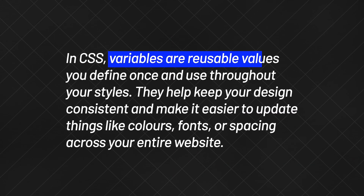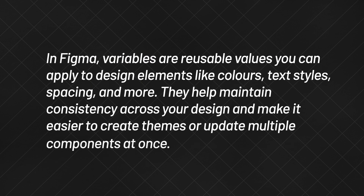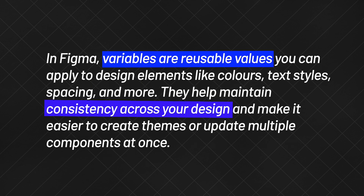In CSS, variables are reusable values you define once and use throughout your entire styles. They help keep your design consistent and make it easier to update things like colors, fonts, or spacing across the entire website. In Figma, variables are reusable values you can apply to design elements — like colors, text styles, spacing, and more. They help maintain consistency across your design and make it easier to create themes or update multiple components at once. So they share a lot of the same principles.